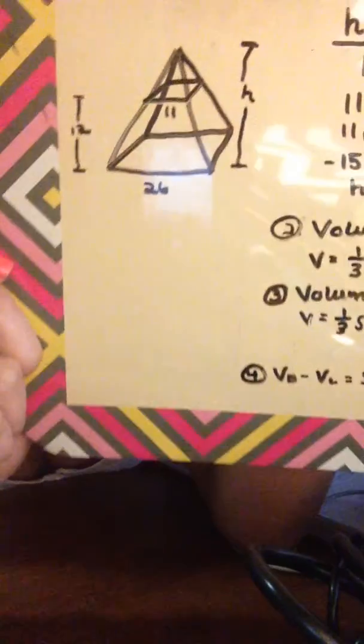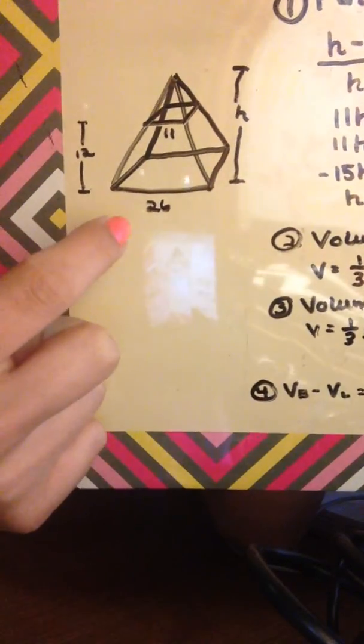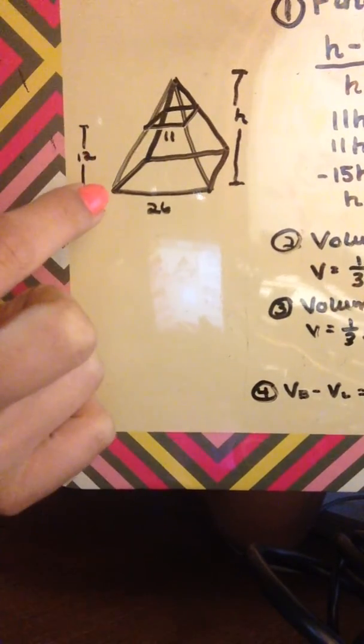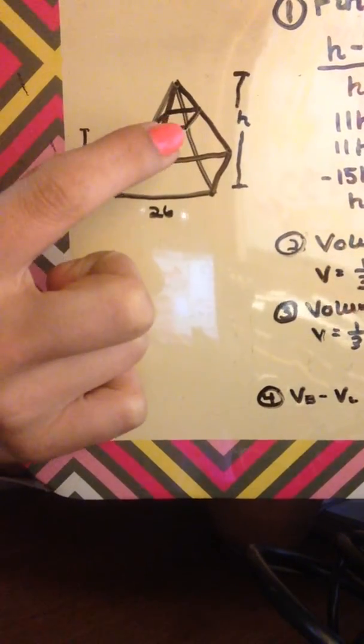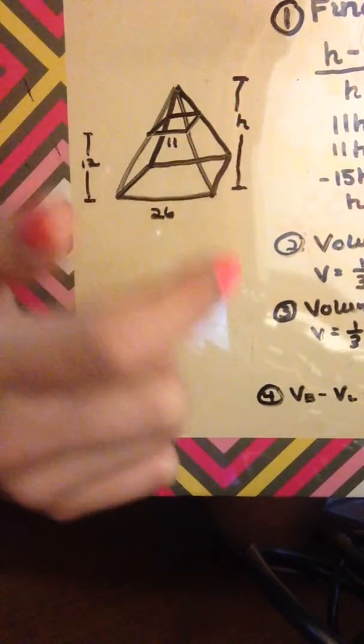So the first thing that you're going to want to do is draw out the situation. So you have a square base 26, height of 12, square top of 11, and h is the height of the entire pyramid.